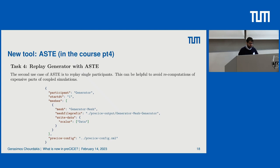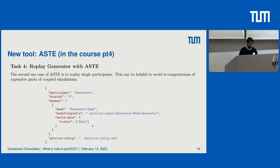You will hear more about ASTE on Thursday in the new part of the training course, where you will see both aspects of replaying and accuracy. The way this works is that, similarly to any other adapter, you write a simple configuration file for ASTE specifying which participant it is imitating, what time it starts from, and what meshes it uses. You point it to specific output VTK files created in a previous simulation, and it writes data. It also needs the central Precise configuration file.